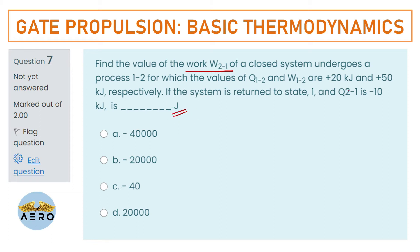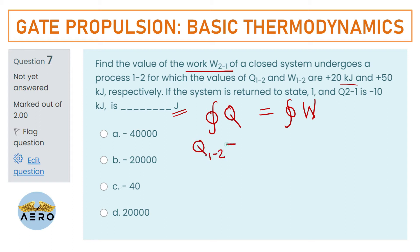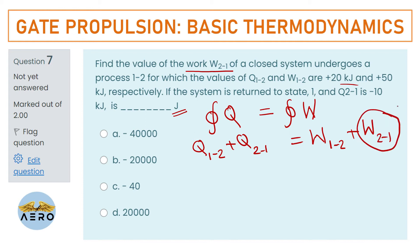Please observe carefully: the given units are in kilojoules, but the answer is required in joules. From the first law of thermodynamics, the summation of all heat equals the summation of all work done. So Q₁₂ + Q₂₁ = W₁₂ + W₂₁, and from this we have to find W₂₁.